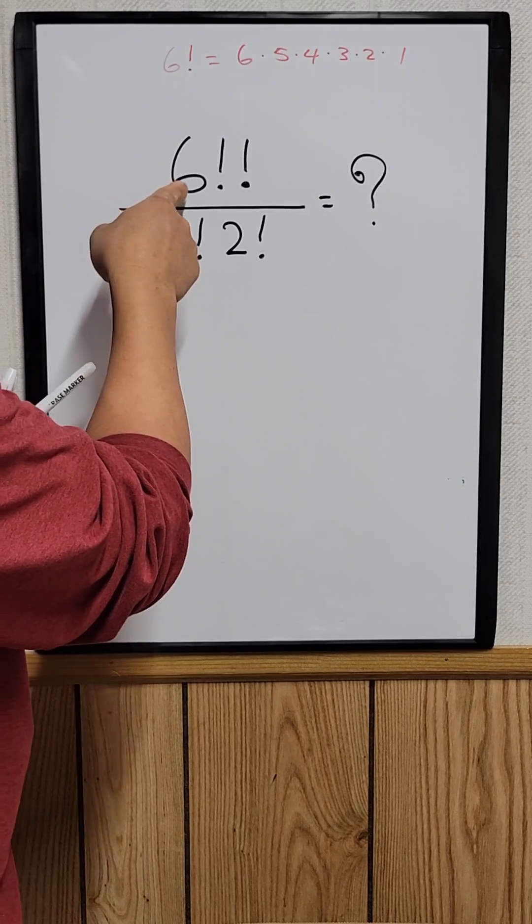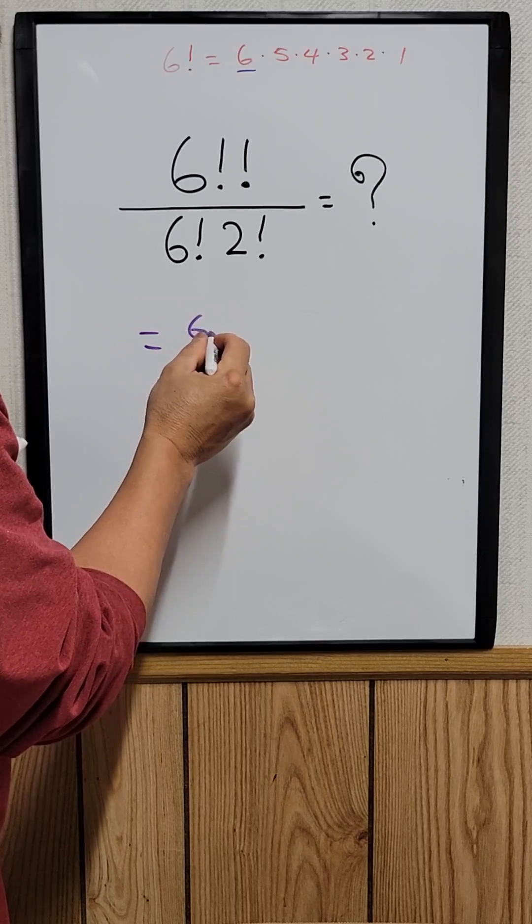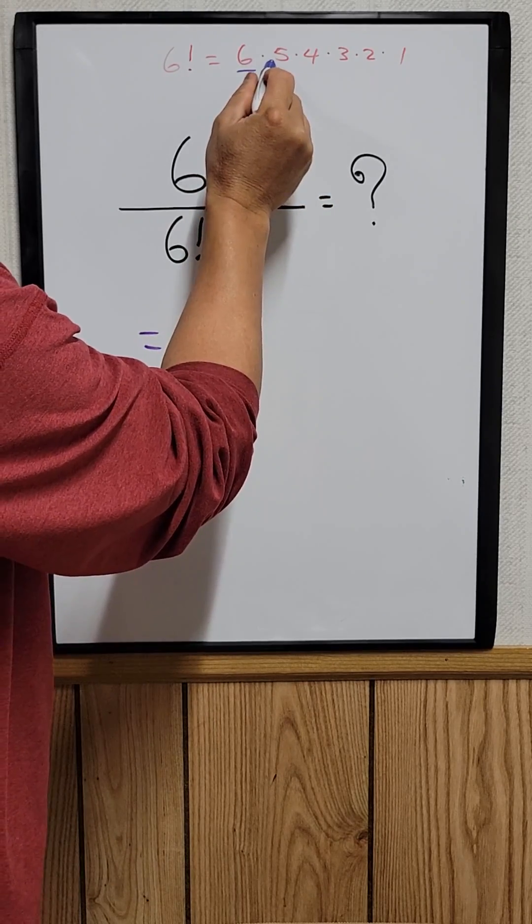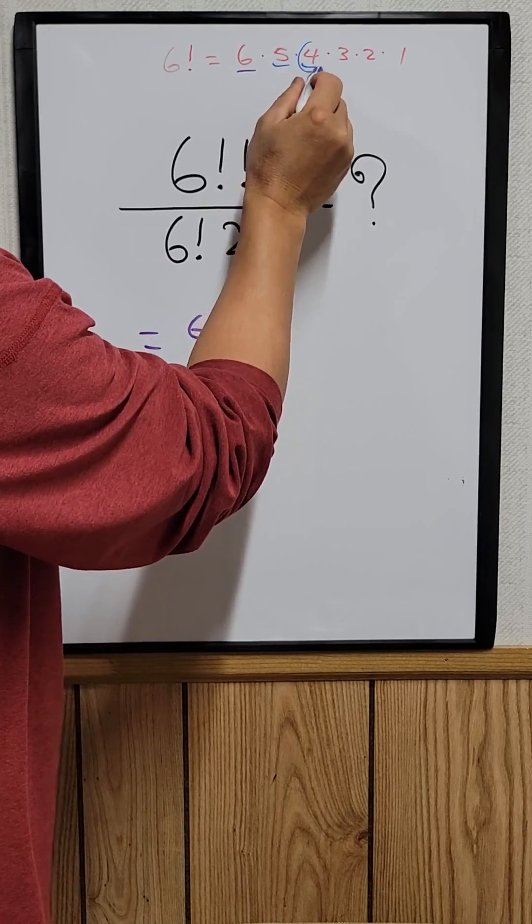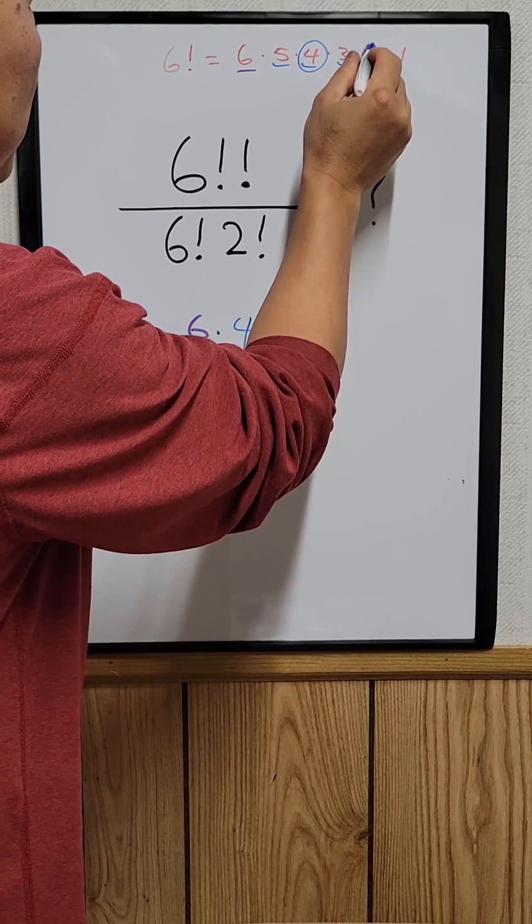To find the six double factorial, you start out with a six. So six, you go two down, one, two. So this is the number you want: two times four, and then you go two down again, and this is the number where you want times two.